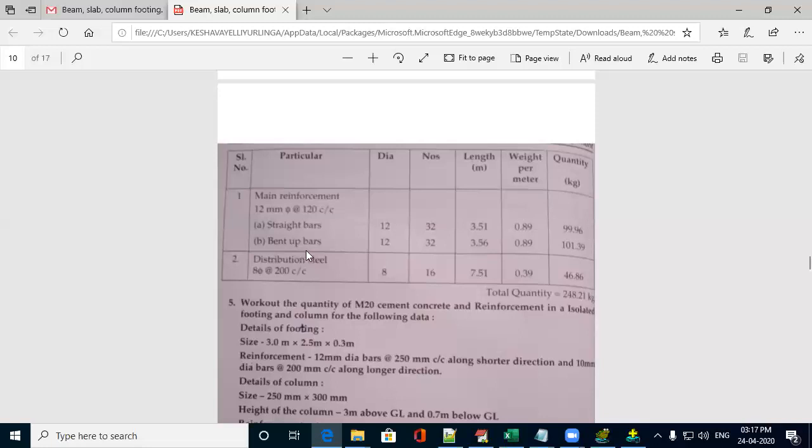Similarly, for the distribution bar, it will be of 8mm dia at 200mm center to center. So dia is 8, number 16, length is 7.51 and weight per meter for 8mm dia, you will get 0.39.